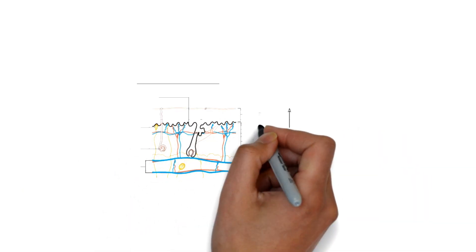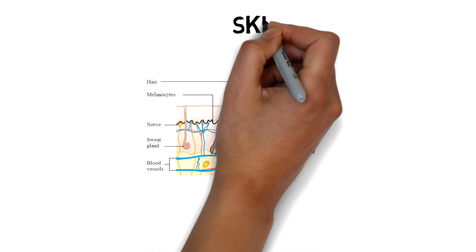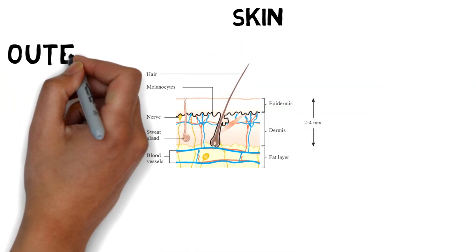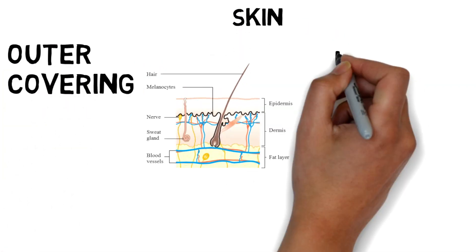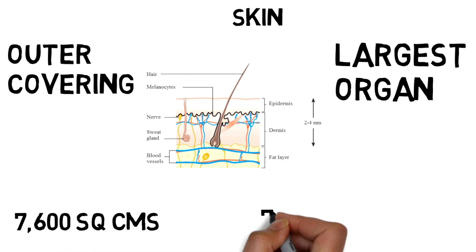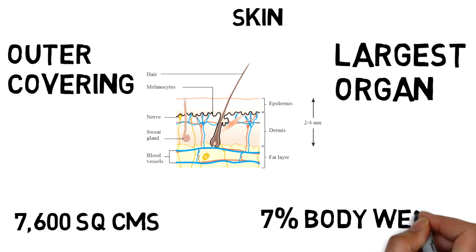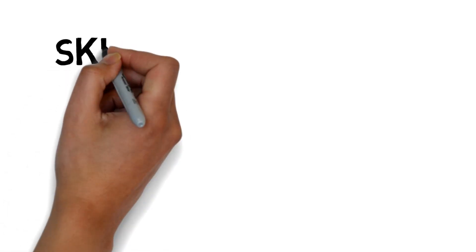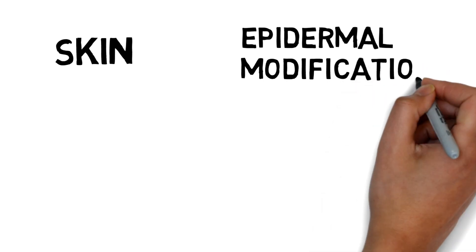Skin is the outer covering of the body and is also the largest organ of the body. In terms of area, it covers nearly 7600 square centimeters of an average adult male. It accounts for 7% of the person's body weight and, along with epidermal modifications, constitutes the integumentary system.